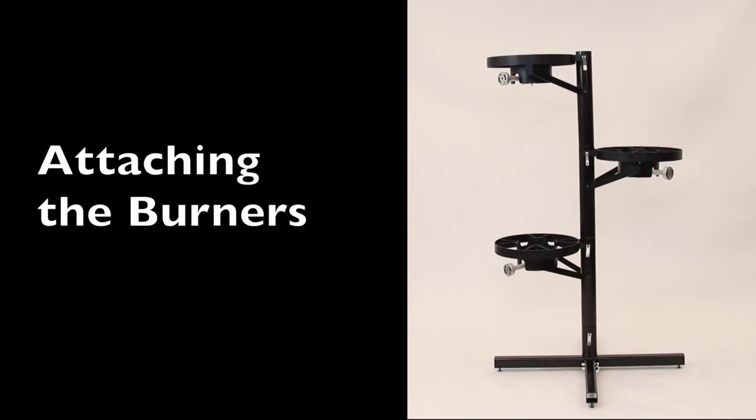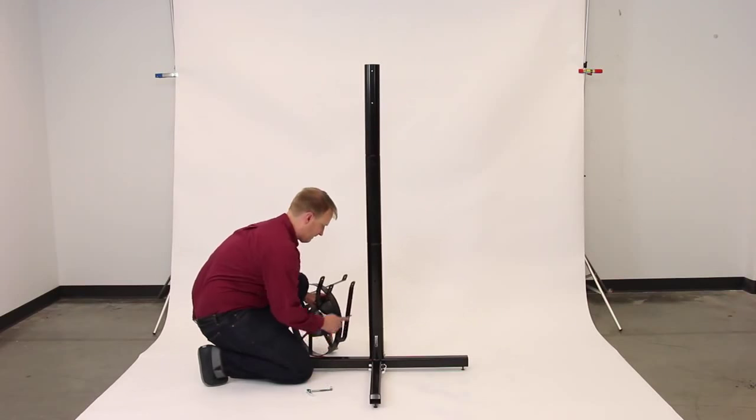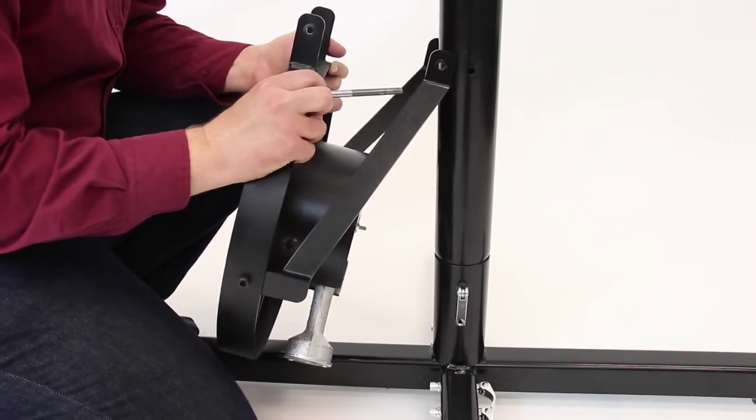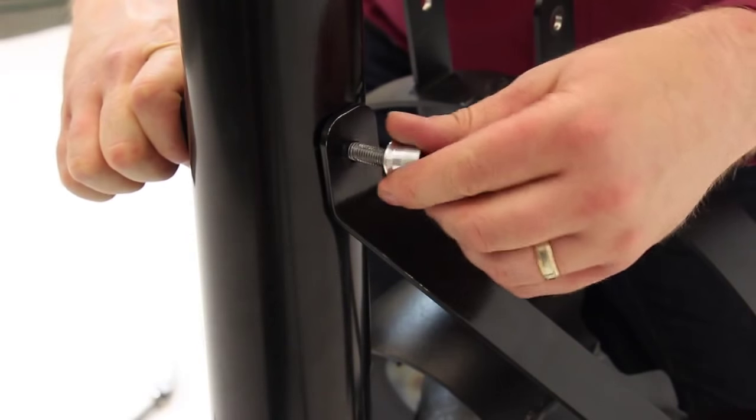Once the base and main support are assembled, it's time to add the burners. First, grab a right oriented burner assembly. Line up the holes of the burner support posts with the two bottom holes on the main support and install a long quick clamp.